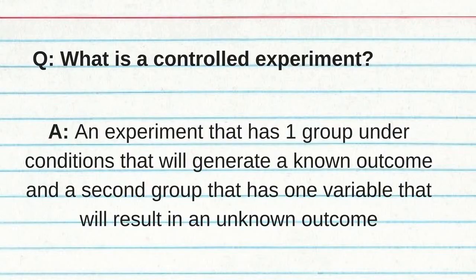What is a controlled experiment? An experiment that has one group under conditions that will generate a known outcome and a second group that has one variable that will result in an unknown outcome.